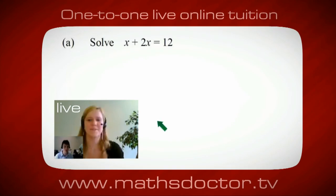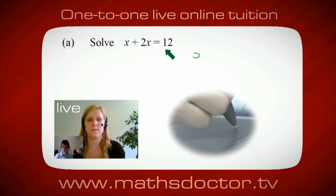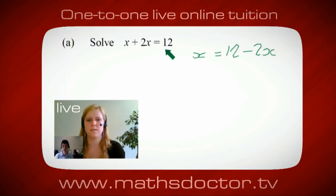OK, Marie, so let's have a look at this one. So solve x plus 2x equals 12. So what do you think you do first? OK, well, I want x on its own. So I would put x equals 12 minus 2x.